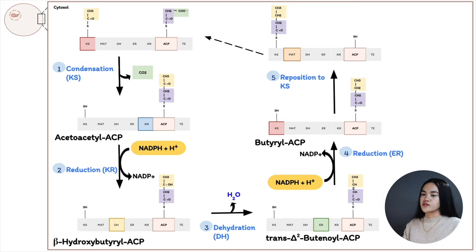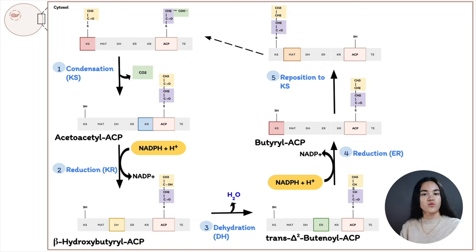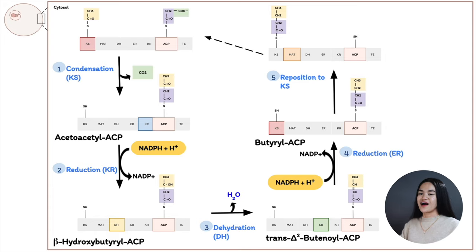For the remaining cycles, only the malonyl group is used, and each time it's transferred in, carbon dioxide is produced — recall this is from the bicarbonate. The fatty acid is ultimately released by thioesterase (the TE domain), which hydrolyzes the thioester linkage using water.